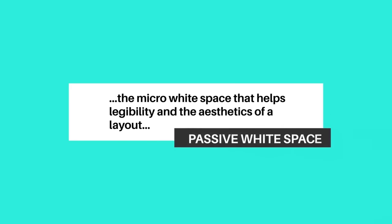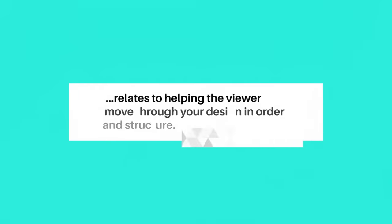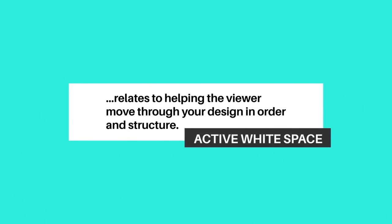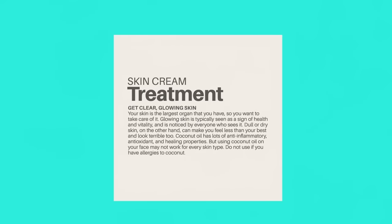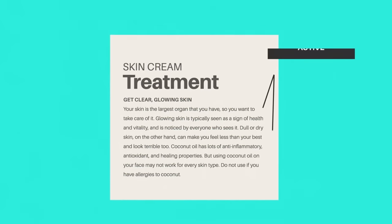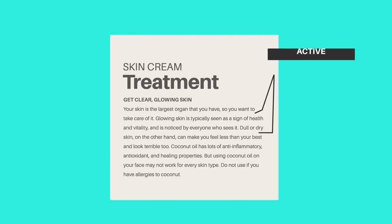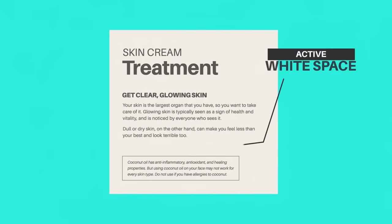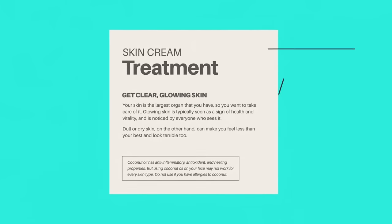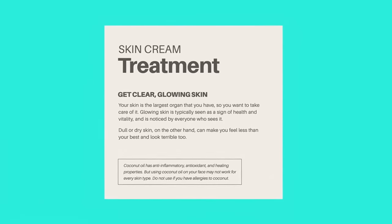Passive white space refers to the micro white space that helps legibility and aesthetics of a layout without guiding the viewer in terms of structure and viewing order. Active white space relates to helping the viewer move through your designs in order and structure. For example, a paragraph with poor use of micro white space is barely legible. Adding passive white space makes it readable and more pleasant. Applying active white space further controls the order and movement of the reading experience, breaking content into digestible chunks.